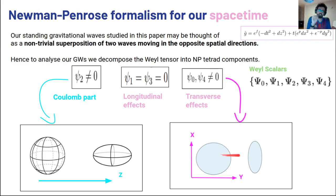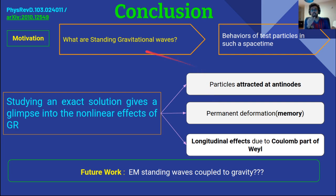In conclusion, we studied an exact solution which actually gave us a glimpse into the nonlinear effects of general relativity. What we found out is that particles are getting attracted at the antinodes, you get a permanent deformation of the test masses which we termed as the memory, and also that because you are superimposing two gravitational waves and you are studying full exact solution, the longitudinal effect which we get is due to the Coulomb part of the Weyl, not due to the longitudinal part of the Weyl scalar.